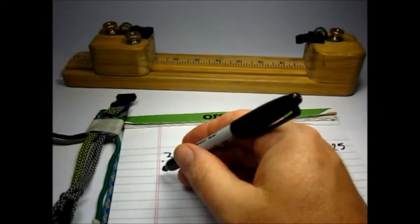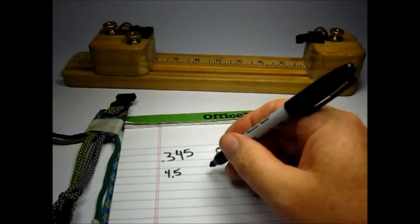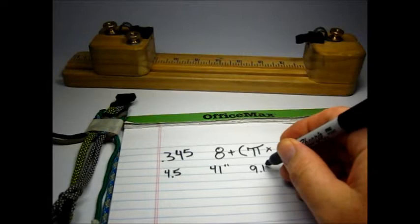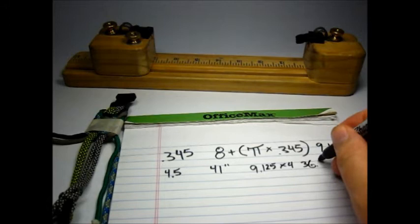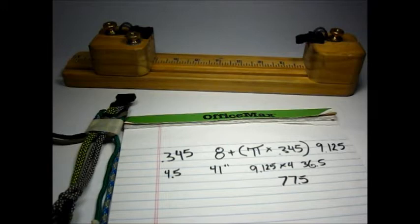So I took my 4 inches per inch. I'm going to give myself a little bit of wiggle room and we'll go 4.5. So that's 41 inches per color. And then my core is going to be 9.08 by 4 because I need a 4 strand core on this. So I need 36.5. So one of my cords needs to be 77.5 inches. The other 3 will be the 41.